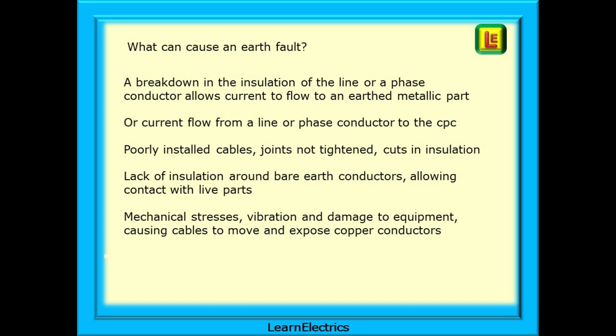Lots of things can cause an earth fault. For example, a breakdown in the insulation of the line or a phase conductor that allows current to flow to an earthed metallic part or current flow from a line or phase conductor directly to the CPC if they touch. Consider poorly installed cables, joints not tightened, cuts and lack of sleeving or insulation around bare earth conductors allowing contact with live parts is common. Then, there are mechanical stresses, vibration and damage to equipment causing cables to move and expose copper conductors or just wear the insulation away with continual prolonged vibration.